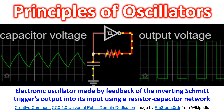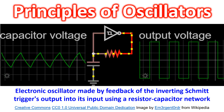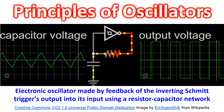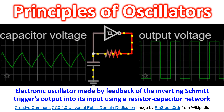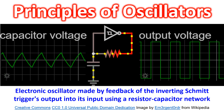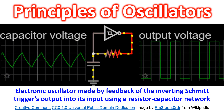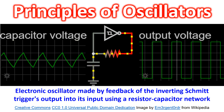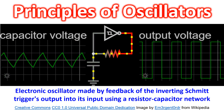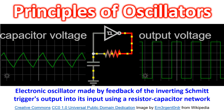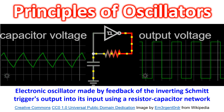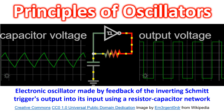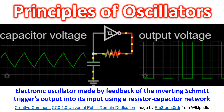An oscillator in electronics is a circuit which produces periodic oscillations or alternating signals, which could be a sine wave, square wave, or another type of wave. The oscillator is powered by a direct current source and can be used in a wide variety of applications like radio, television, computer, and mobile phone.